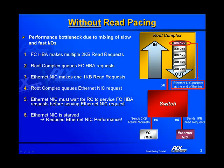However, the Ethernet NIC must wait for the root complex to service the Fiber Channel HBA requests before servicing the Ethernet NIC's read request. This causes endpoint starvation on the Ethernet NIC, and as a result, the Ethernet NIC performance is significantly impacted.